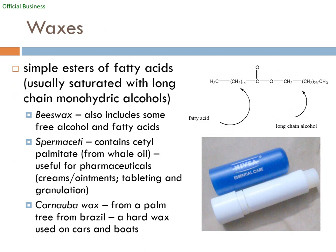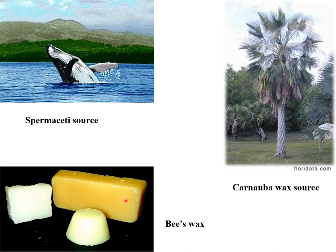Other lipids include waxes — simple esters of fatty acids. We usually see them in lip balms and candles. These are very long-chain alcohols esterified with very long-chain fatty acids, creating many hydrophobic sites and making them very hydrophobic. Due to their long chains and saturation, they tend to clump and form waxy substances. Examples include beeswax, which comes from beehives; spermaceti, from whale oil; and carnauba wax, from a palm tree.